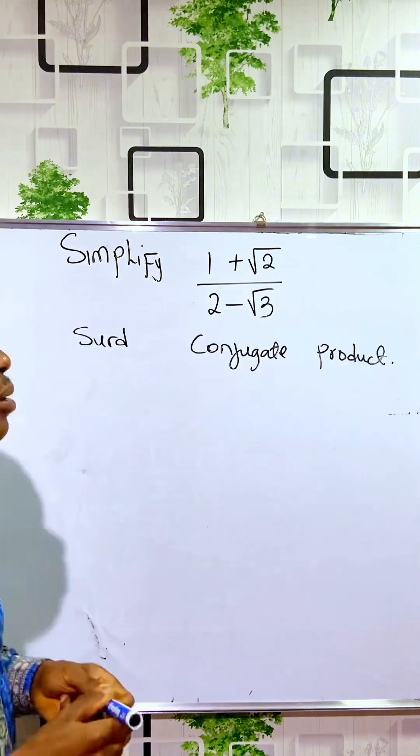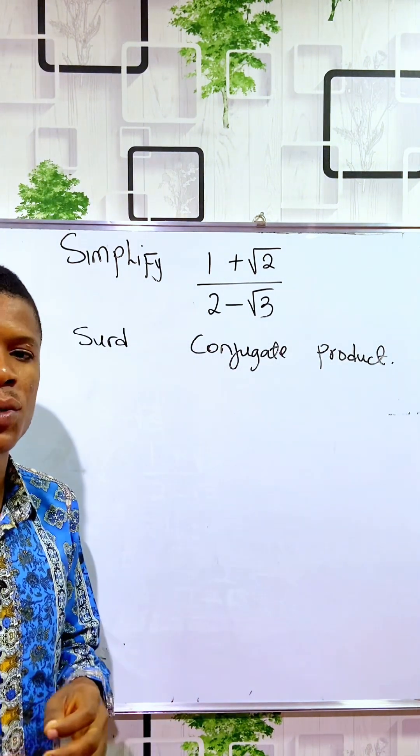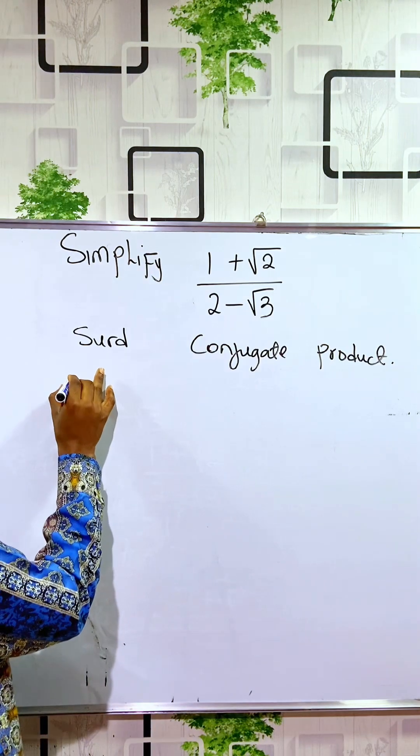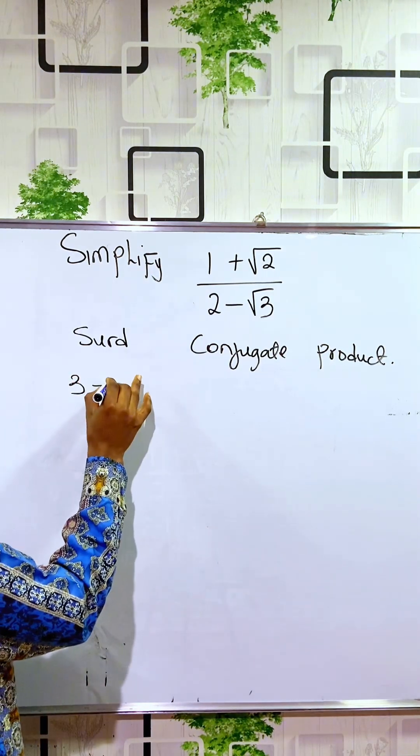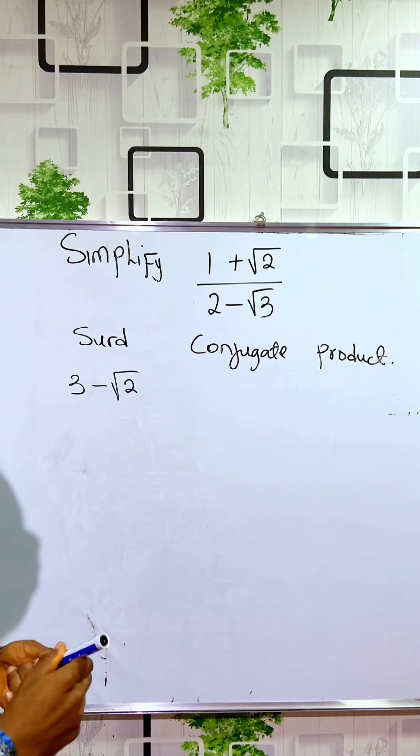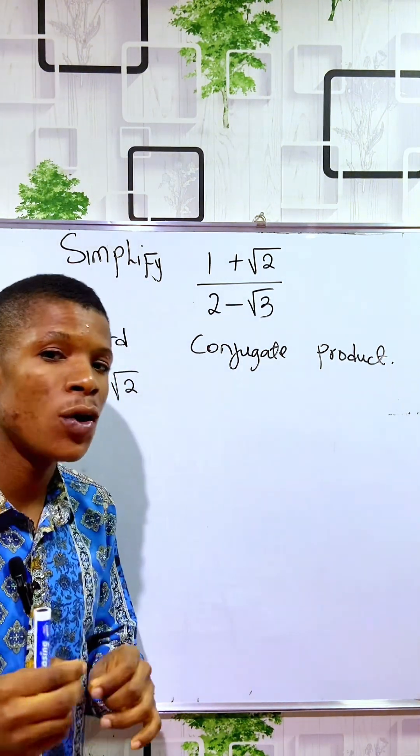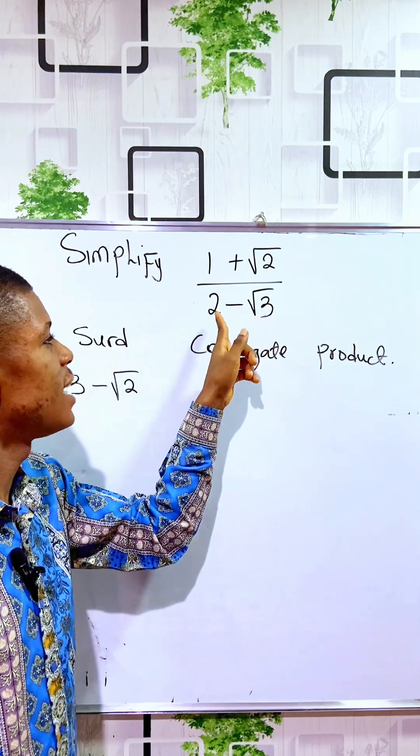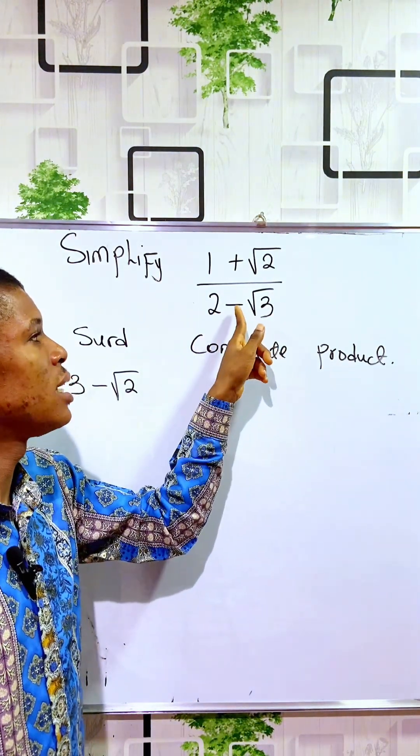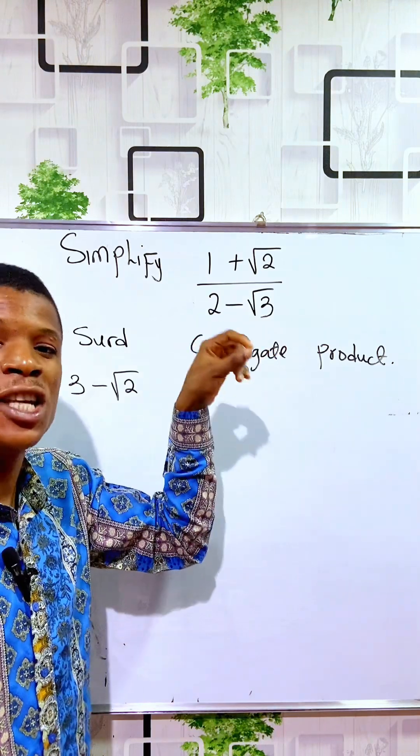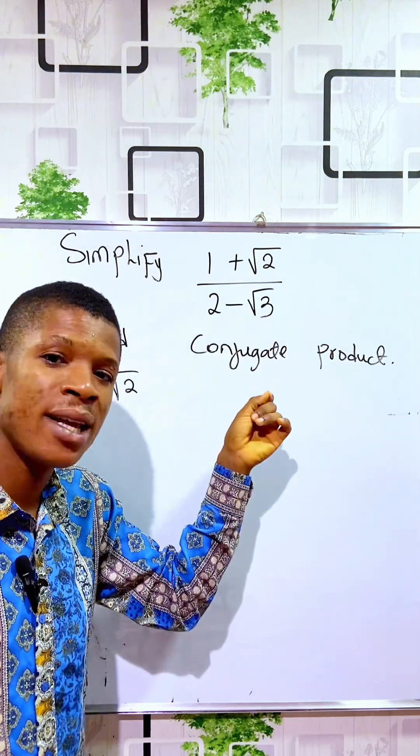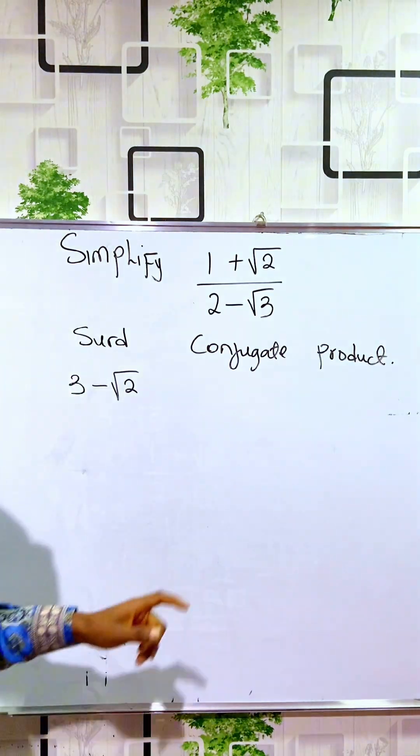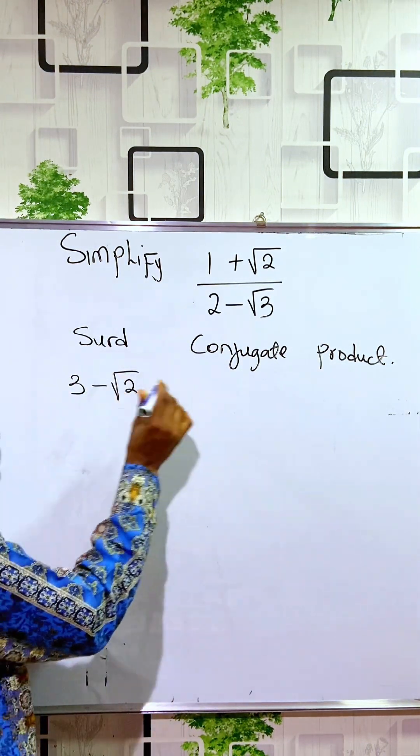What do we mean by conjugate surds? Let me illustrate this. Let's look at a surd. For instance, I have 3 - √2. This is a surd. When we talk about conjugate surds, all we have to do is change the sign that separates the number and the surd. If it is plus, change to minus. If it is minus, change to plus.